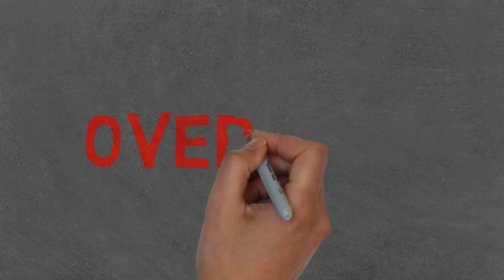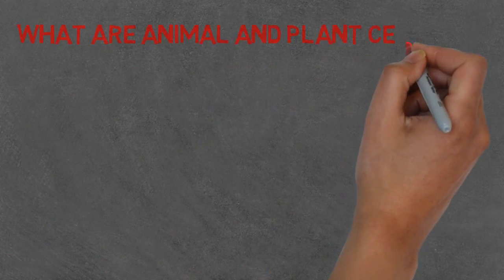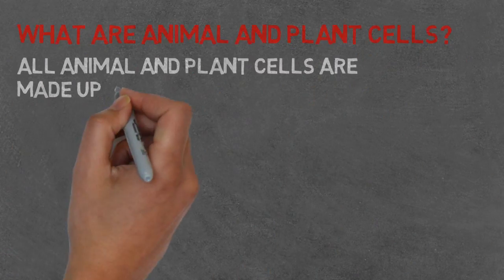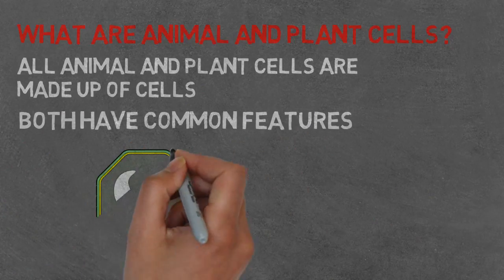An overview to see if you've all been listening. What are plant and animal cells? All animal and plants are made up of cells and both have common features.